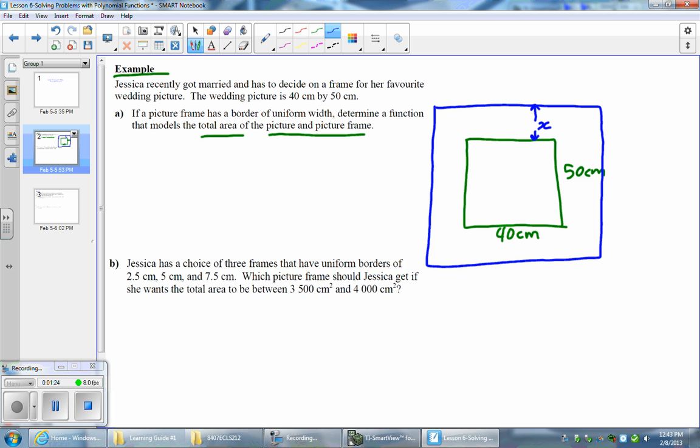So that's the width of the frame. It's going to be equal to x and we want to model this situation using a polynomial. More specifically, you want to model the area of the picture and the picture frame. From previous years you know that area is equal to length times width.